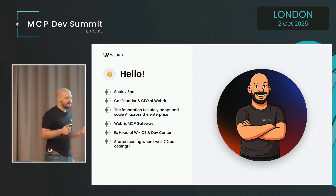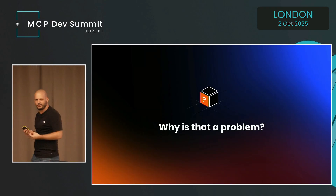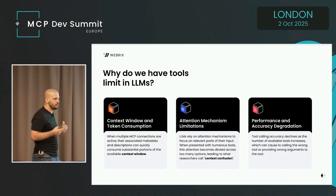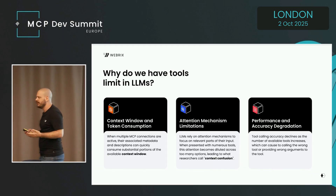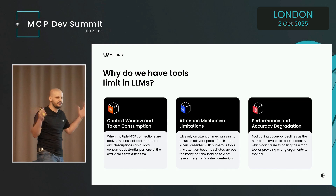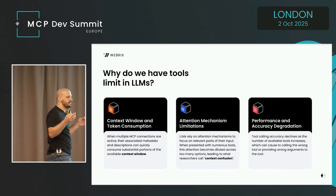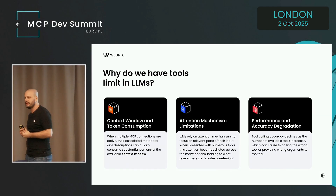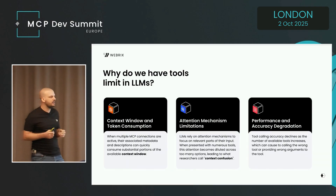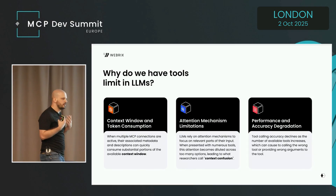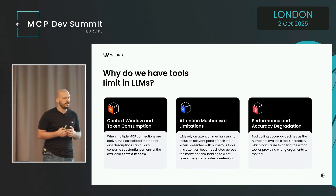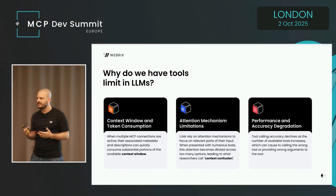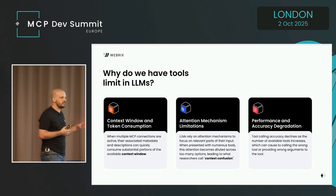Let's deep dive into too many tools. Three main issues: the first one is context. When you use tools, all the descriptions and arguments go inside your context. It's not just taking a lot of context — it can cost you a lot of money when you use too many tokens just to show the tools. You haven't even used a single tool yet. The second issue is attention — if you have too many tools, the LLM starts making a lot of mistakes because it can't decide which attention to put on which tool.